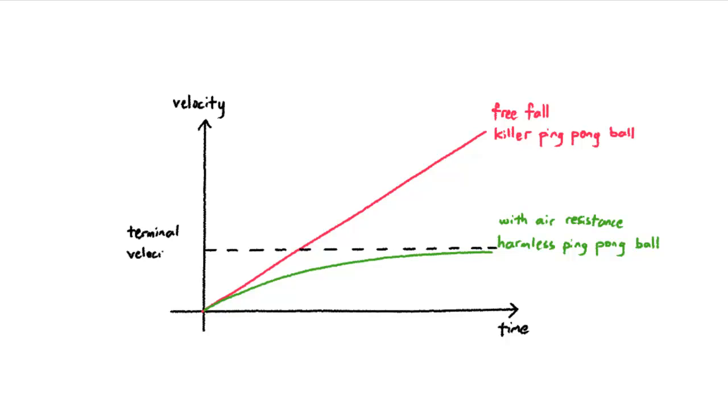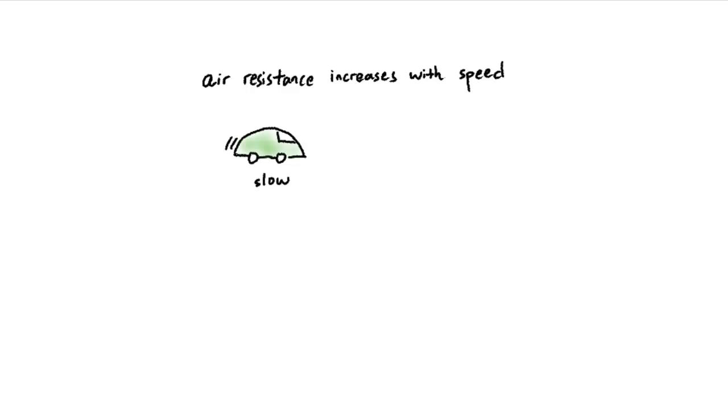This is called the terminal velocity. The phenomenon of terminal velocity arises because of this interesting property of air resistance. The faster an object pushes its way through air, the larger the air resistance it encounters.